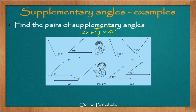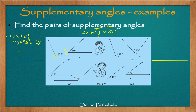Let's start with the first one. We have angle X and angle Y. I'll draw a straight line to reduce confusion. For the first part, angle X plus angle Y equals 110 plus 50, which is equal to 160. Since 160 is not equal to 180 degrees, these angles are not supplementary angles — they are not supplements of each other.